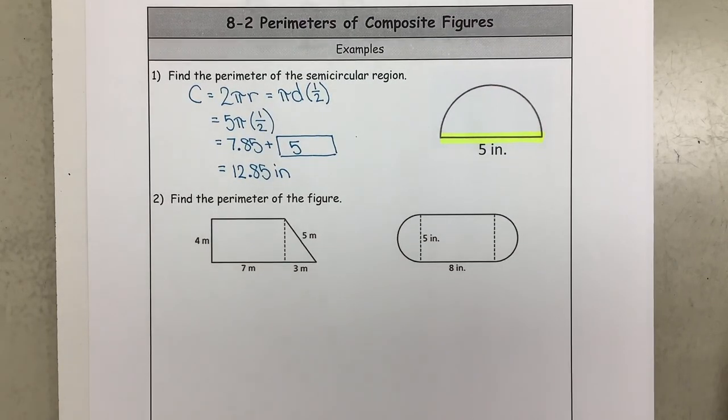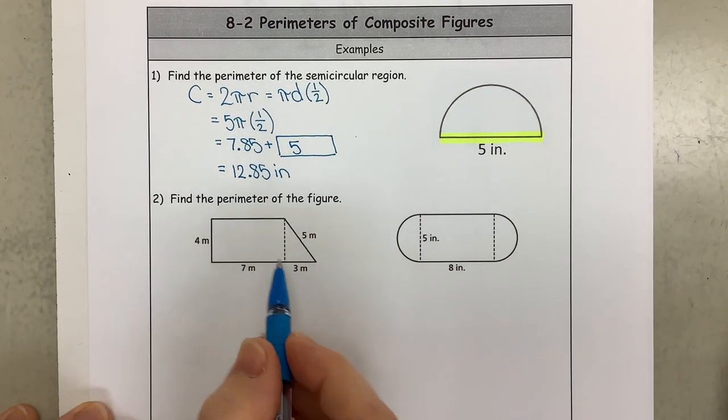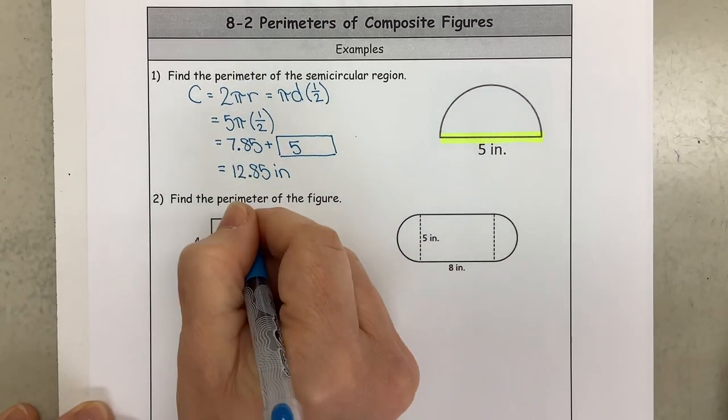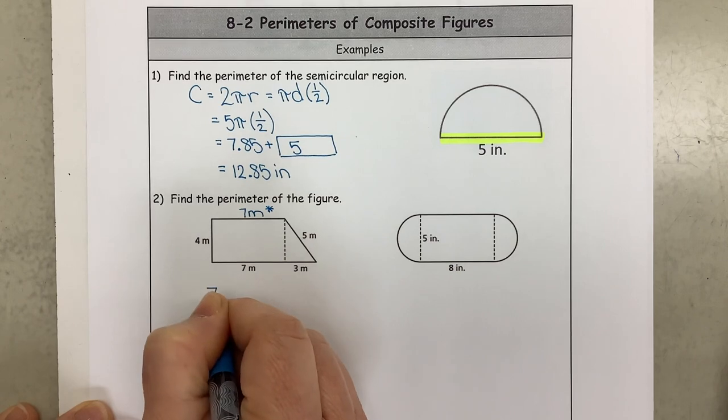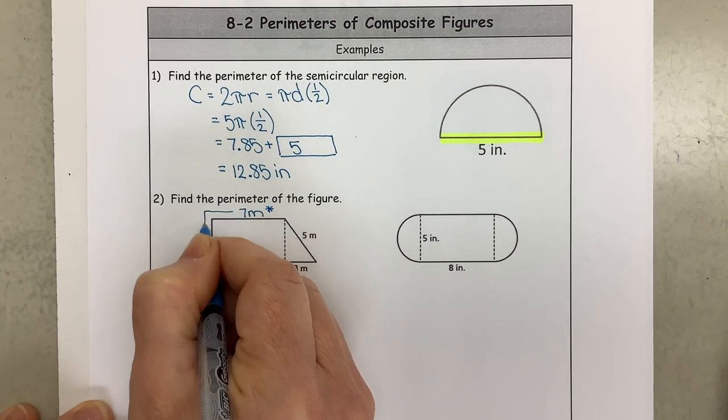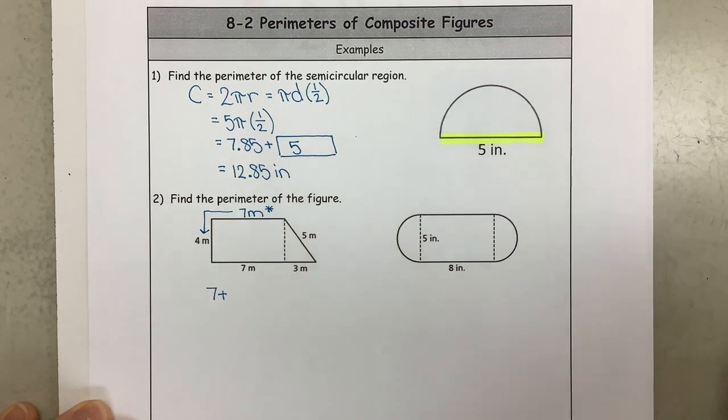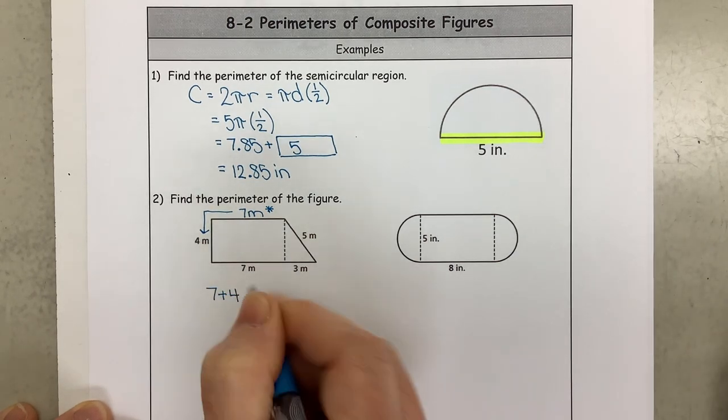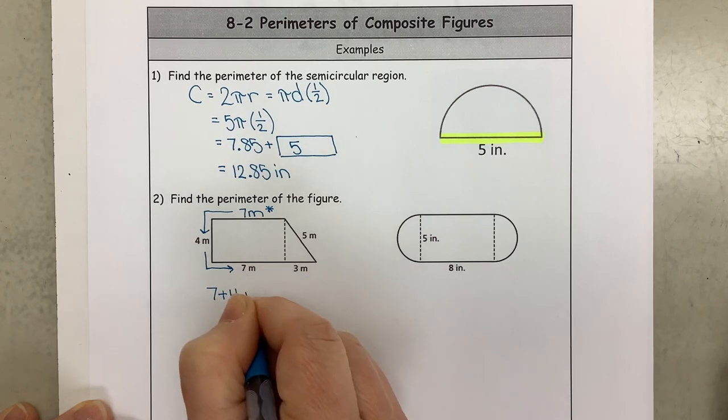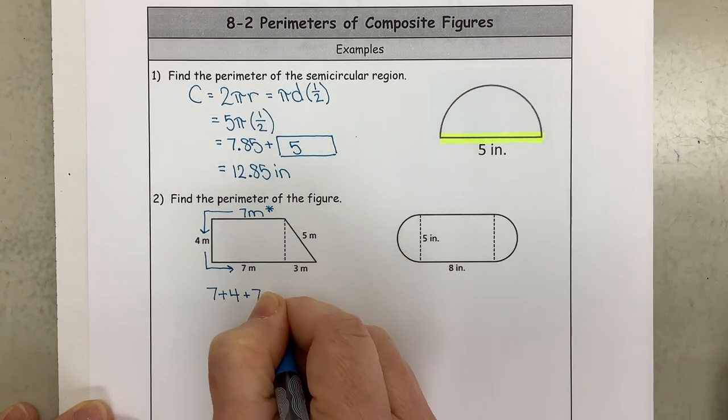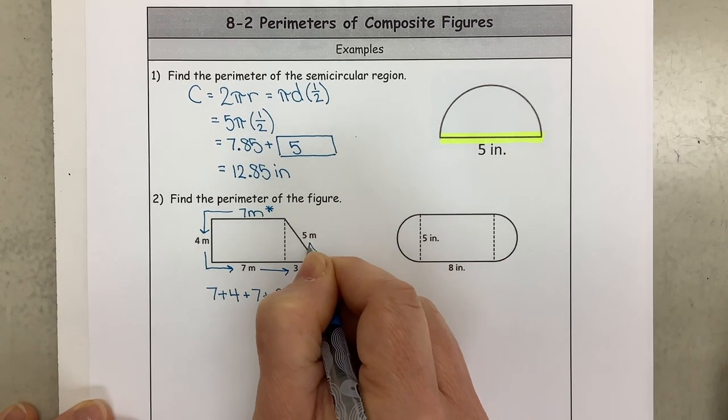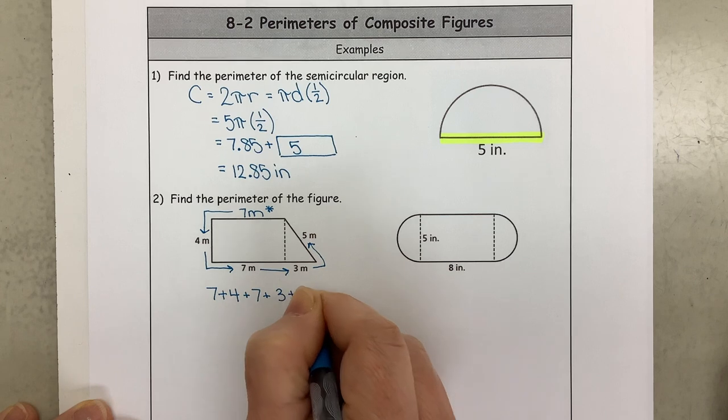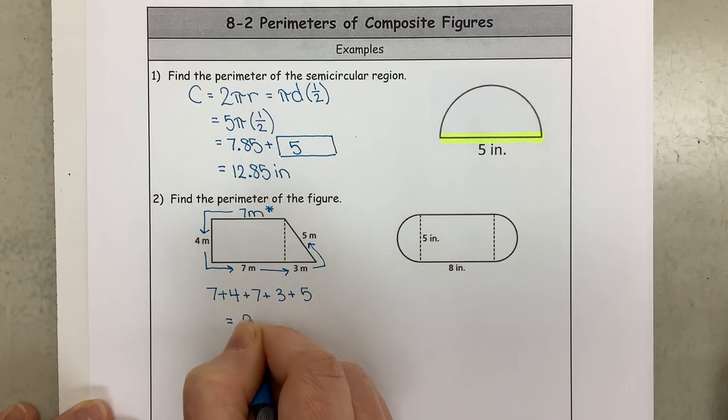So the only thing different is we have to remember this piece here. Alright, here's another one we're going to find the perimeter of. We need to start at a certain spot. I know this is 7 so I know this piece up here is also 7 meters. So I'm going to start here, so I'm going to go ahead and start letting me know I'm starting there so I don't get lost. And I'm going to go around so I'm going to add a 4 to this, a 7, you have a 3 over here and a 5. Okay, when I add these all up I get 26 meters.